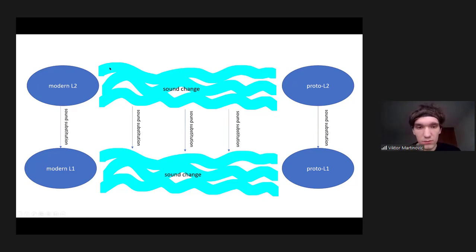So I added here on the right side the proto L2 and the proto L1. And now the tricky thing is that when we reconstruct these languages, we have these corners, we know how the language sounded now, we can more or less reconstruct how it used to sound. But the substitutions, they could have happened during any stage in between.